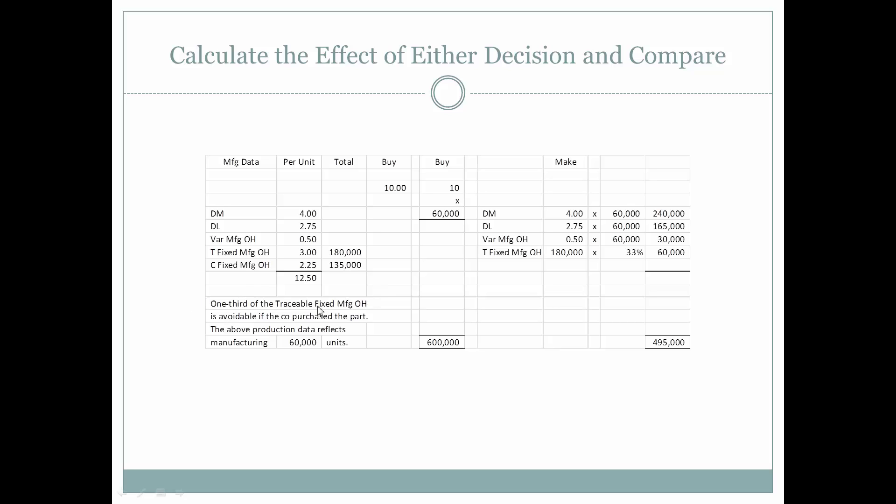One-third of the traceable fixed manufacturing overhead is avoidable if the company purchases the part. Two-thirds of this is unavoidable. Two-thirds of $180,000 will continue whether the company makes the part or buys the part. Only one-third of it is relevant and what we should consider when we're talking about how much it's going to cost for us to make this part.